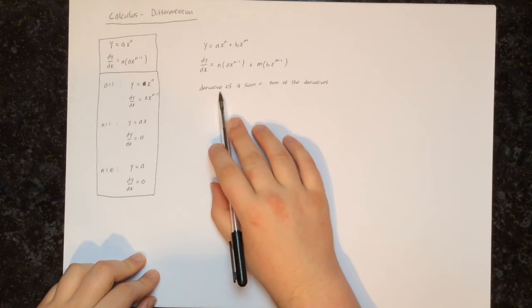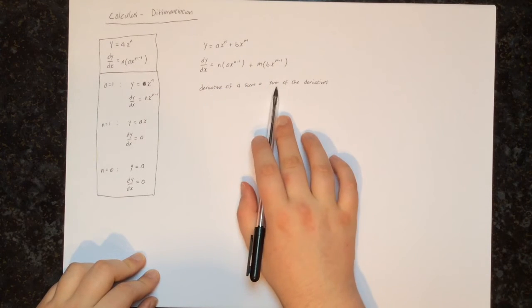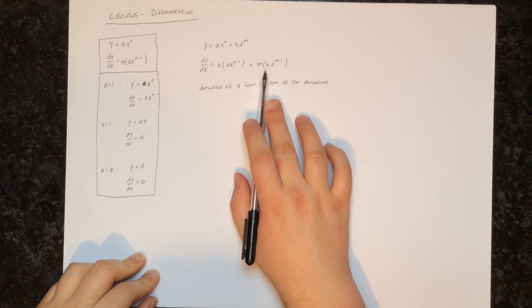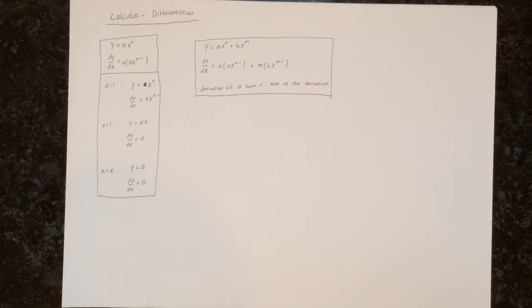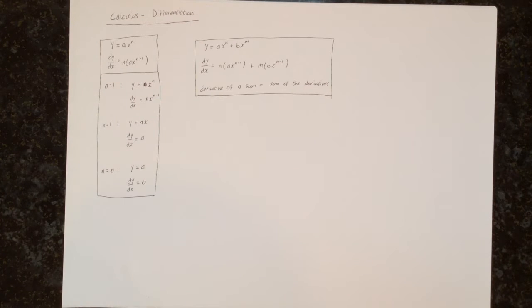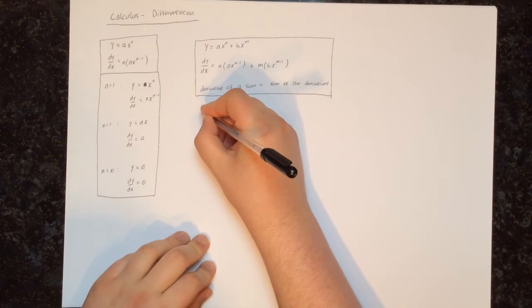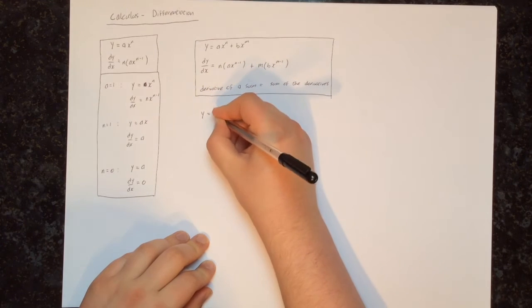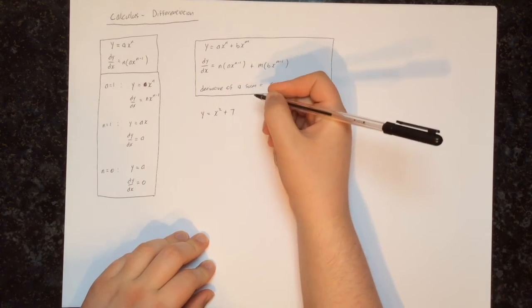To take the derivative of things added together, we just add together the derivatives of each individual thing. Now let's see how this works in practice, because it's much easier to understand when we start actually working with numbers. So for our first example, let's take y is equal to x squared plus 7.